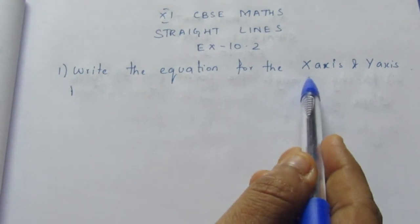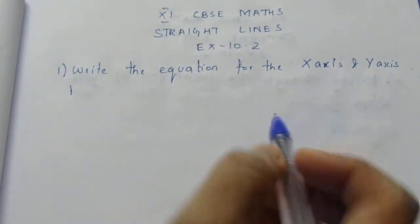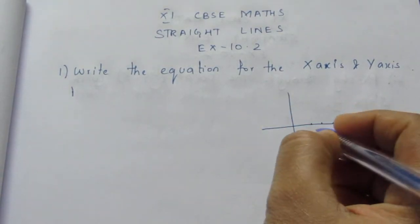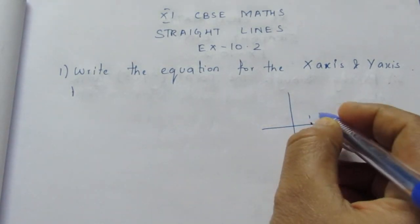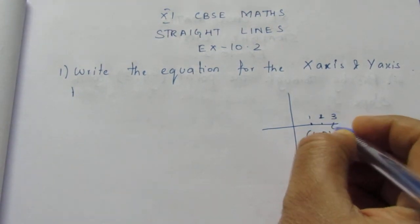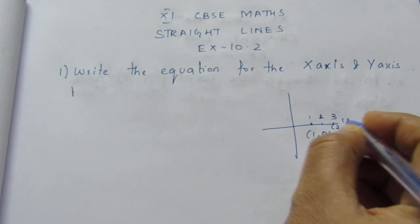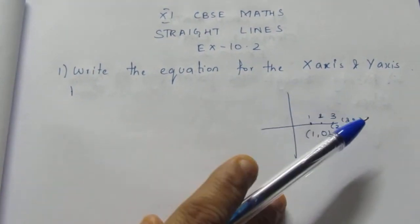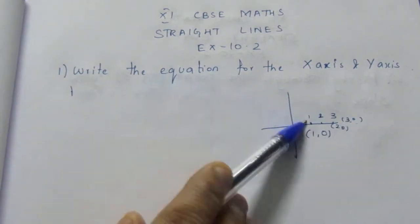We need to find the equation for the x-axis and the y-axis. On the x-axis, we know that the point will be, if I take this is 1, 2, 3, then it will be (1,0), (2,0), (3,0), like that it goes on the x-axis. This is just a rough sketch for you to understand, not included in the solution.